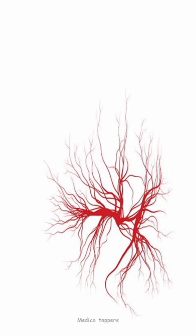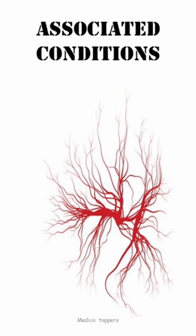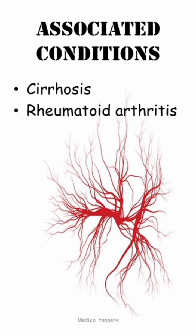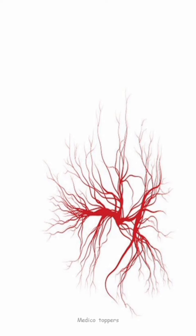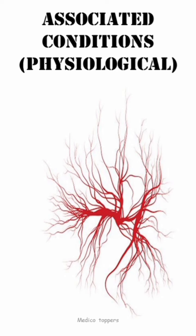Spider nevi is associated with liver diseases, but it is not only a liver association. There are a few other diseases associated with spider nevi — those are rheumatoid arthritis and thyrotoxicosis. Other than those conditions, spider nevi can also be seen in a physiological condition, that is pregnancy.